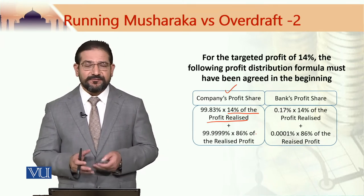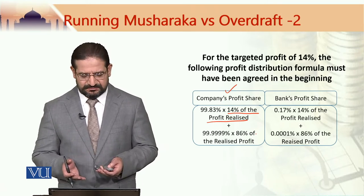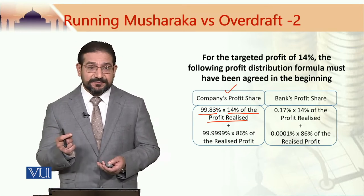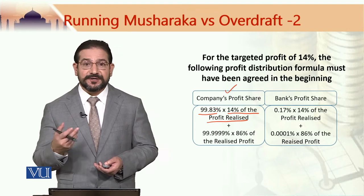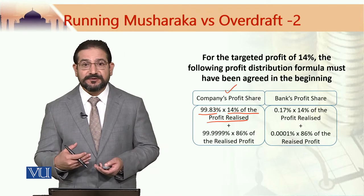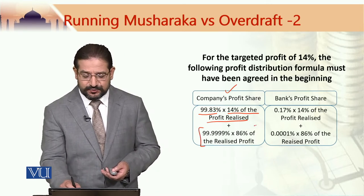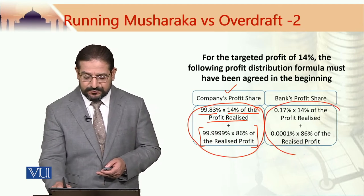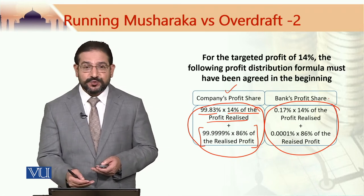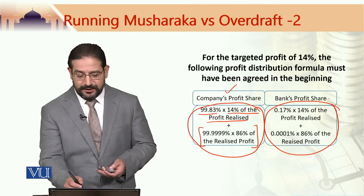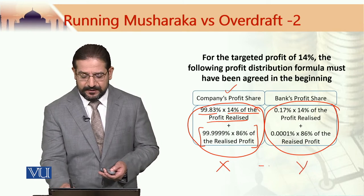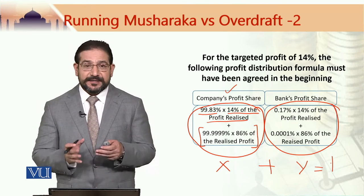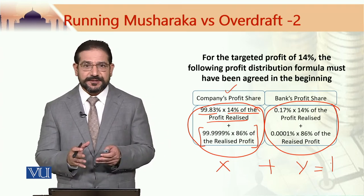This seems like a complicated profit distribution formula, but actually it is not. It basically says that the investment share of the respective party is multiplied with a chosen rate — in this case 14% was the indicative or targeted rate of return which the bank wanted to get from this financing. This is actually a Sharia requirement to make sure that if the two ratio values are x and y, their addition should be equal to 1. This formula is used by Islamic banks offering running Musharraka-based overdraft facility in Pakistan.